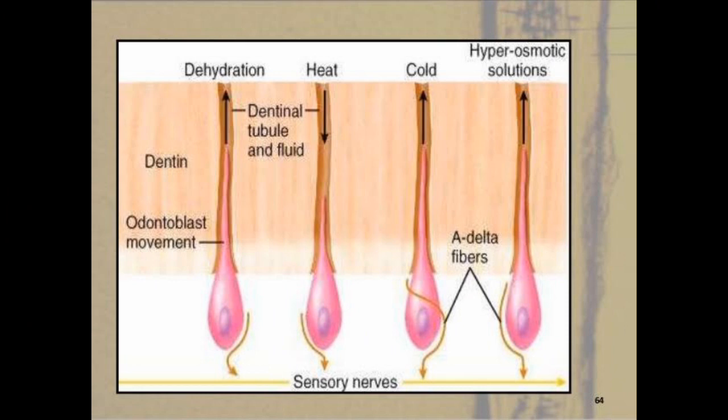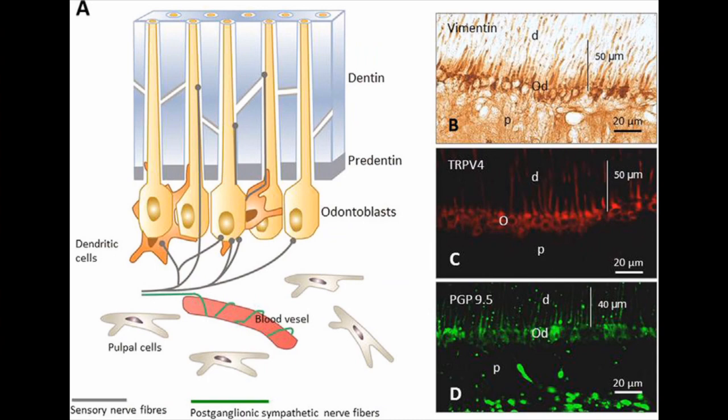The second theory that was presented is known as the odontoblast transduction theory. This theory was very popular and stated that odontoblasts act as receptors and, through synaptic junctions with the free nerve endings, they appear to cause dentine hypersensitivity.